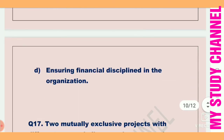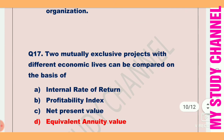Next question: Two mutually exclusive projects with different economic lives can be compared on the basis of — option A is internal rate of return, B is profitability index, C is net present value, D is equivalent annuity value. Option D is the right answer — equivalent annuity value.